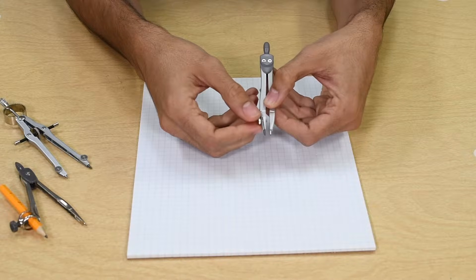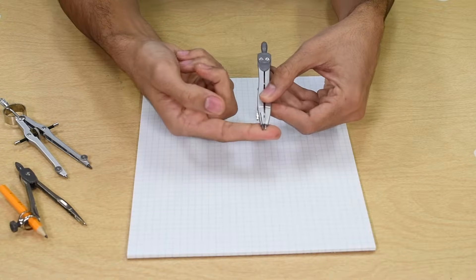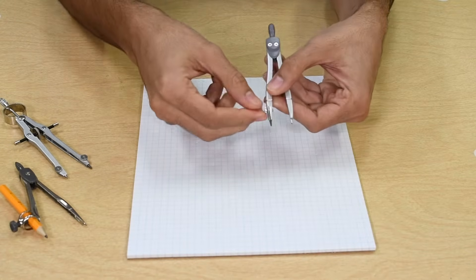For the graphic compass or bow compass, make sure your lead aligns with the needle. If not, loosen the side screw and adjust the lead length.